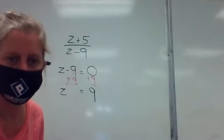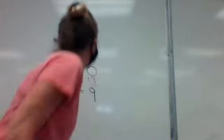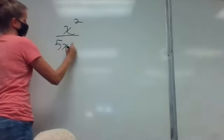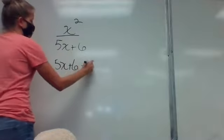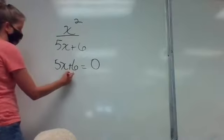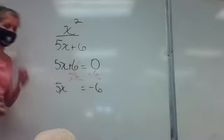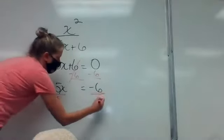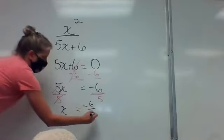Number 6: you have x squared over 5x plus 6. I only care about the denominator. Set 5x plus 6 equal to zero; subtract 6 from both sides to get 5x equals negative 6, so x equals negative six over 5.